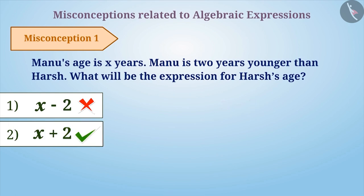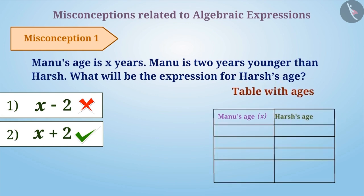Here, x plus 2 is the right answer. To obtain the correct expression, it is very important to understand the given information. Here, you can create a table for the age of Manu and the age of Harsh.